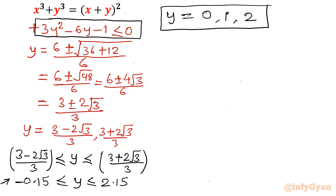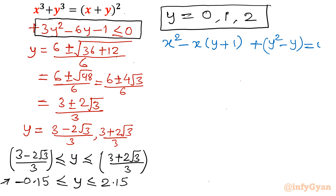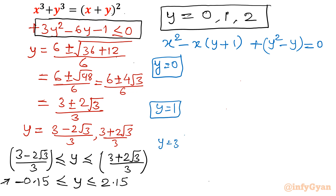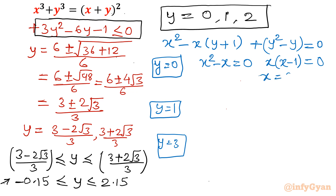Now let us recall the quadratic equation in x: x² minus x(y plus 1) plus y² minus y equals 0. For the case y equals 0, the equation becomes x² minus x equals 0, so x(x minus 1) equals 0, giving x equals 0 or x equals 1.